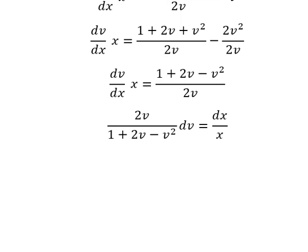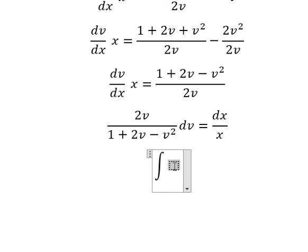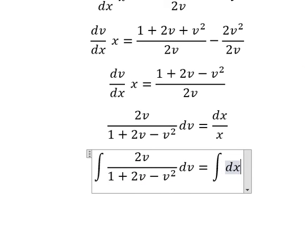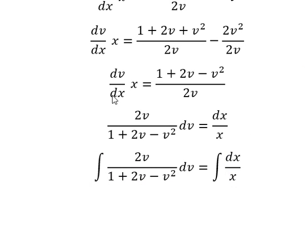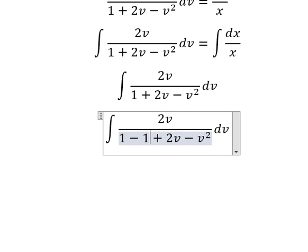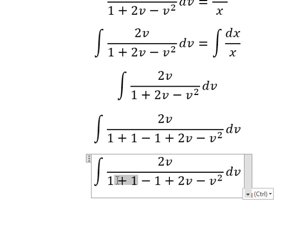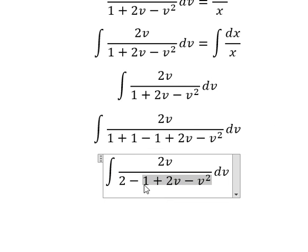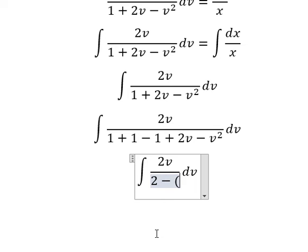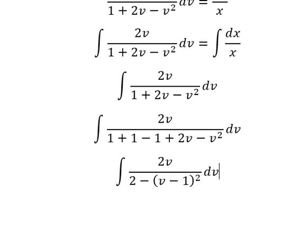Next, we can apply integration to both sides. I will concentrate on this side only. We need to have negative number 1, which means we need to apply the identity number 1. So 1 plus 1 equals 2 — this is about the identity. We can write it as v minus 1 to the power of 2.